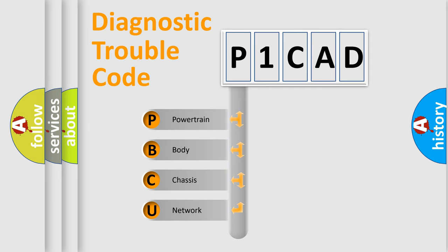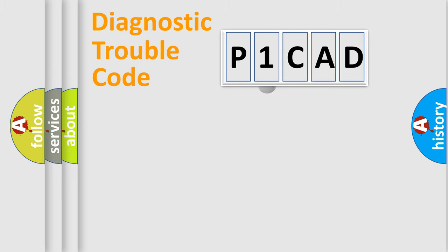We divide the electric system of automobile into four basic units: Powertrain, Body, Chasis, and Network. This distribution is defined in the first character code.